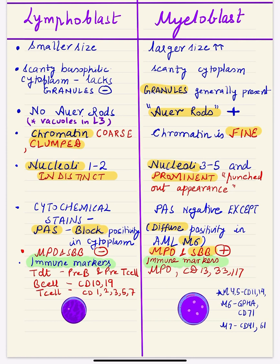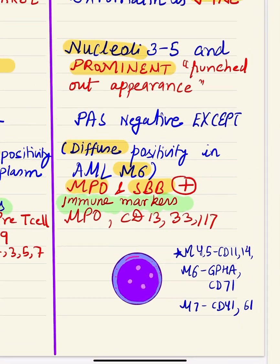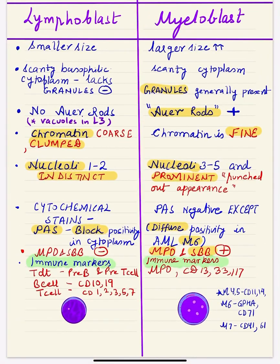Although lymphoblasts generally do not have vacuoles, in the L3 category of the FAB classification, vacuoles can be seen. Vacuoles are a feature of L3 ALL and are not seen in myeloblasts. Regarding nucleoli: in lymphoblasts, the nucleoli are inconspicuous, indistinct, and fewer in number — 1 to 2. In myeloblasts, nucleoli are prominent, generally 3 to 5 in number, and have a punched-out appearance, as if the chromatin at that place has been removed with a punch.